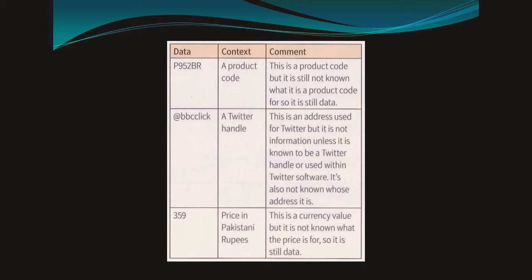Now let's go to the examples given by the book. P952BR is data — it's a product code, but this product code belongs to what? We are not sure, so we cannot make any decision on it. Then we come to @BBCclick — it's a Twitter handle, an address used for Twitter, but it is not information unless it is known to be a Twitter handle. It's also not known whose address it is. Then we come to 359 — it's a price in Pakistani rupees, a currency value, but it is not known what the price is for, so it is still data.